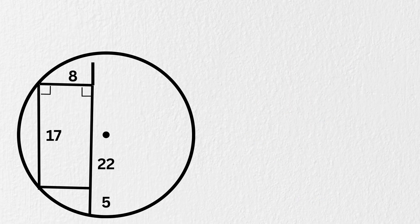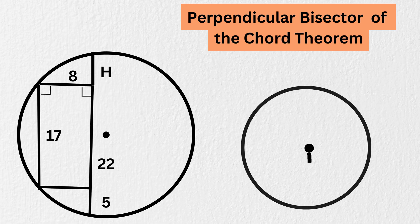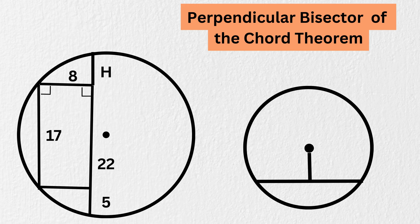Now let us draw this line and complete this chord, and let us label the length of this piece as H. Now there is a theorem called the perpendicular bisector of a chord theorem, which states that a line drawn from the center of a circle to a chord, which is perpendicular to the chord, will always bisect it, or cut the chord into two equal parts.